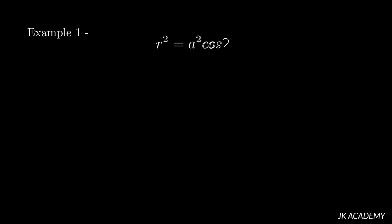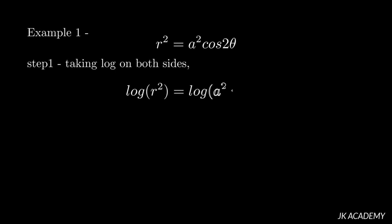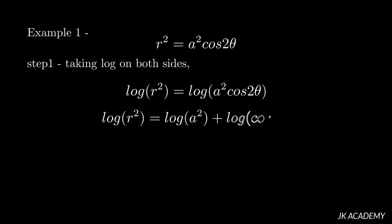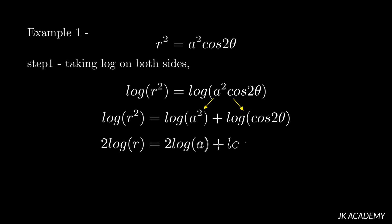Let's implement these steps on a question: r² = a²cos2θ. Step one is taking log on both sides: log r² = log(a²cos2θ). Applying log properties, log(a·b) = log a + log b, so the RHS becomes log a² + log cos2θ. The LHS log r² = 2 log r, and log a² = 2 log a. So we get 2 log r = 2 log a + log cos2θ. This is the maximum deduction we can do by taking log.